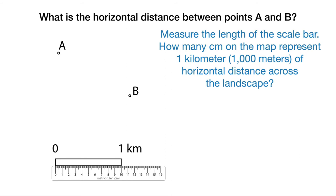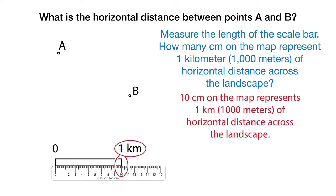Be as accurate as you can in placing the zero line of the ruler on the zero edge on the left side of the bar scale. This bar scale is 10 centimeters long on the map representing 1 kilometer of horizontal distance in the field across the landscape.